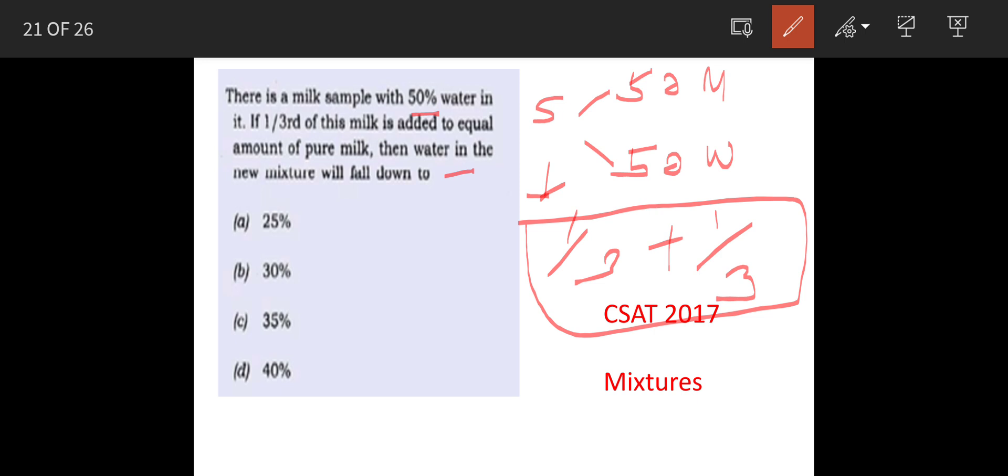For ease of calculation, we can consider this as 100 litres because one third of each remains one third. So this will be 100 litres and this will also be 100 litres.